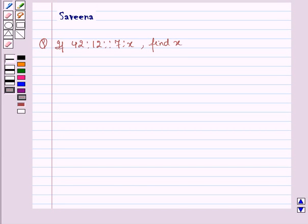Hello all and welcome to the session. Today the question is if 42 is to 12 as 7 is to x, find x.